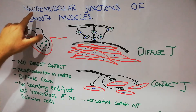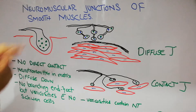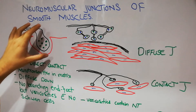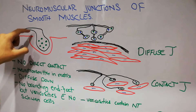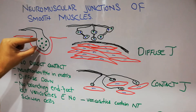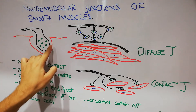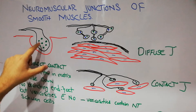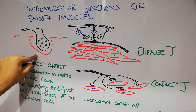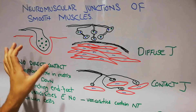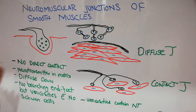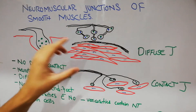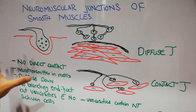Today we are going to discuss the neuromuscular junction of smooth muscles. In skeletal muscles, the neuromuscular junction is formed by the penetration of the muscle fiber membrane deep inside, forming a synaptic cleft in which transmitters are secreted. These transmitters go deep inside the muscle fiber to activate it, with excitation traveling via the T-tubule or transverse tubule. In smooth muscles, however, the neuromuscular junction is not that complicated.